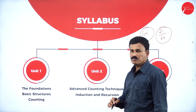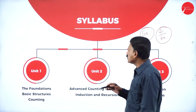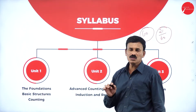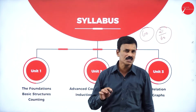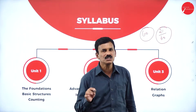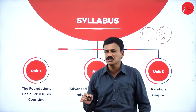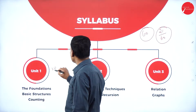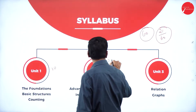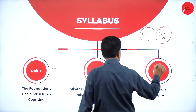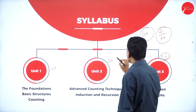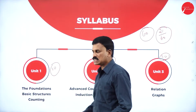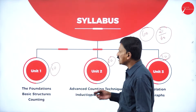In this subject, what are the main chapters? There are only 3 units. Each unit carries 20 marks — so first unit carries 20 marks, second unit carries 20 marks, and third unit carries 20 marks. Totally 20 plus 20 plus 20 equals 60. So 3 units are there.